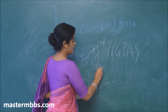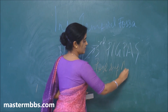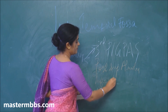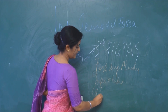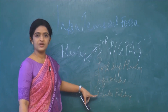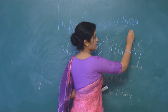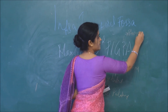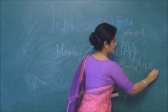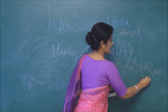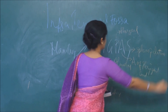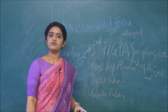Let's expand PIGPAS: P stands for posterior superior alveolar, I stands for infraorbital, G stands for greater palatine, P stands for pharyngeal artery, A stands for artery of the pterygoid canal, and S stands for sphenopalatine artery. So these are the main branches arising from the third part of the maxillary artery.